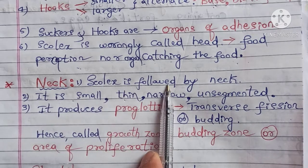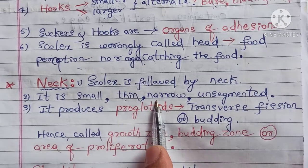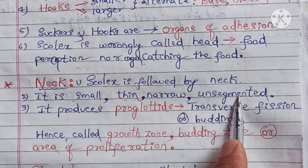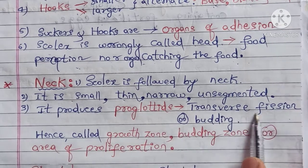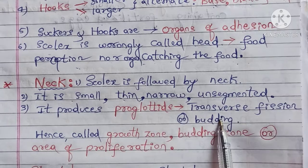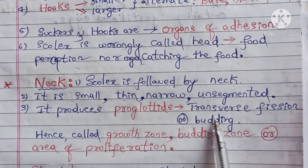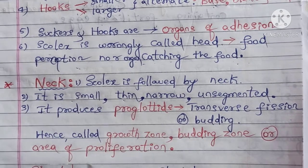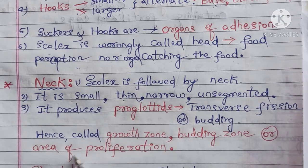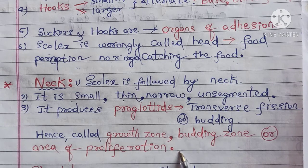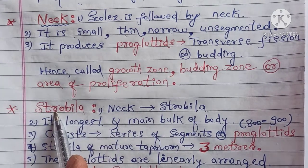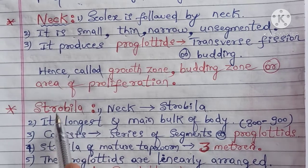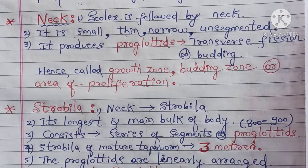The neck is small, narrow, very thin, and unsegmented. Its important function is producing proglotids by transverse fission or budding — forms of asexual reproduction. The neck produces proglotids through asexual reproduction, hence it is also called the growth zone, budding zone, or area of proliferation. The neck is followed by the strobila.